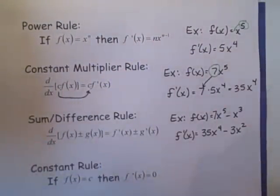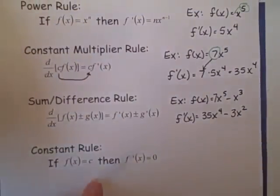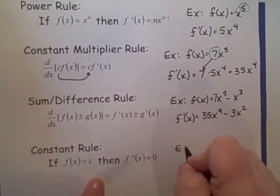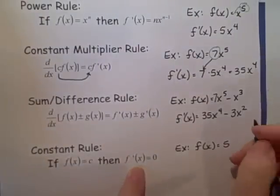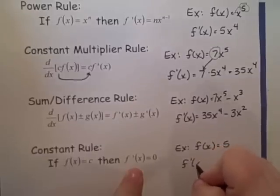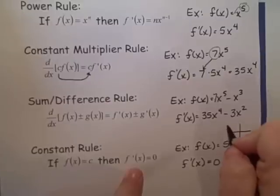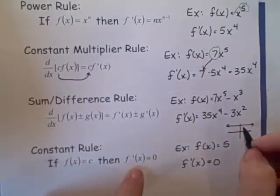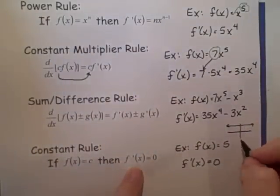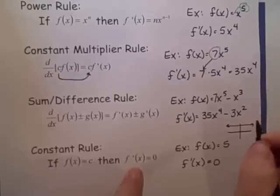The last rule we have is called the constant rule. This tells us that if we have a function that's just a constant — for instance f of x equals five — then the derivative is just zero. If f of x equals five, this is just a horizontal line through five, and the derivative is the slope of that line, which is zero because it's a horizontal line.